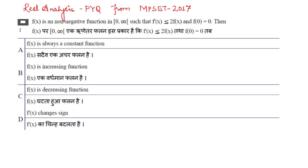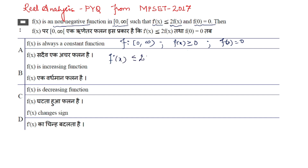We are discussing previous year questions of real analysis from MPSET 2017. The question is: f(x) is a non-negative function on [0, ∞) such that f'(x) ≤ 2f(x) and f(0) = 0. We need to determine whether f is always a constant function, increasing function, decreasing function, or changes sign.